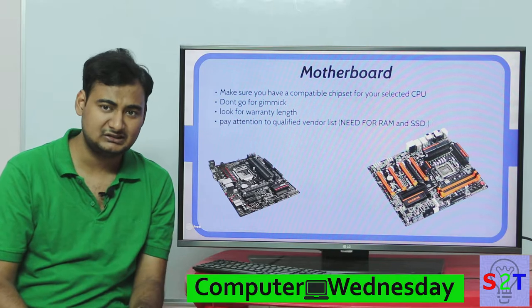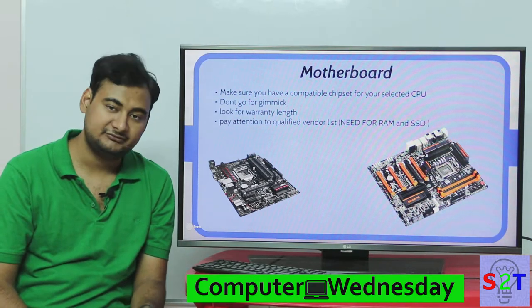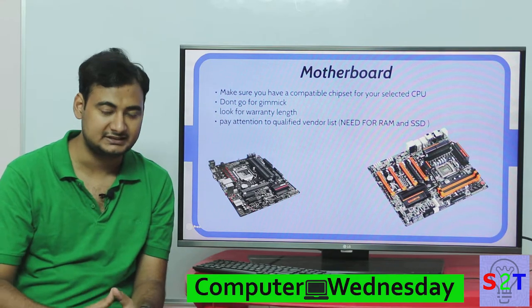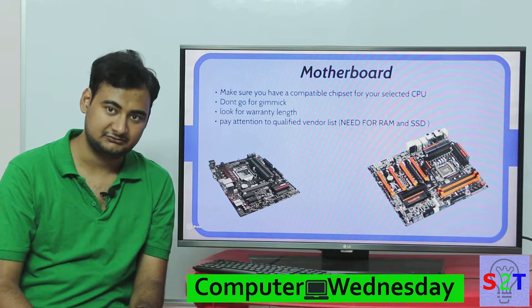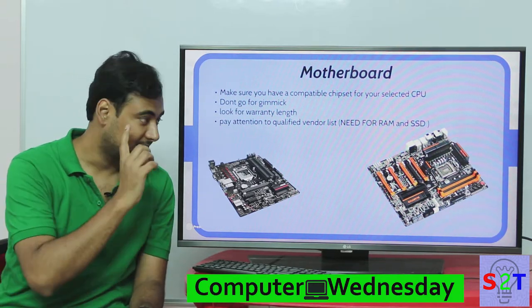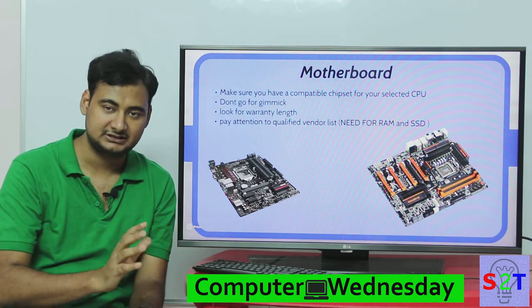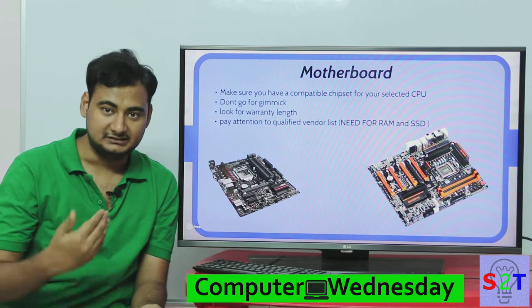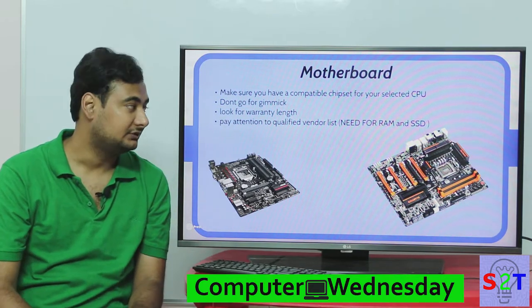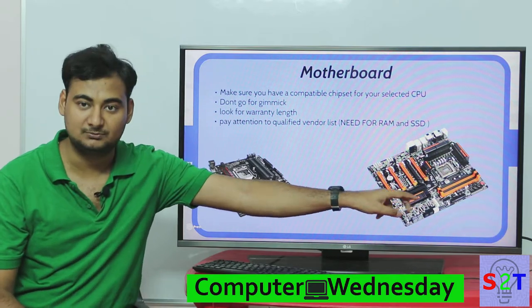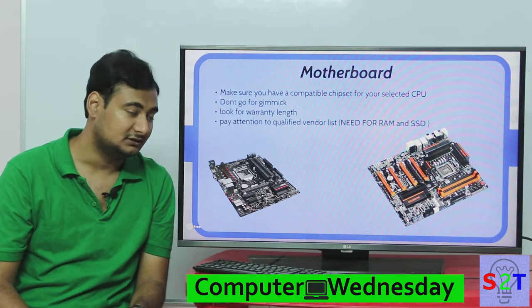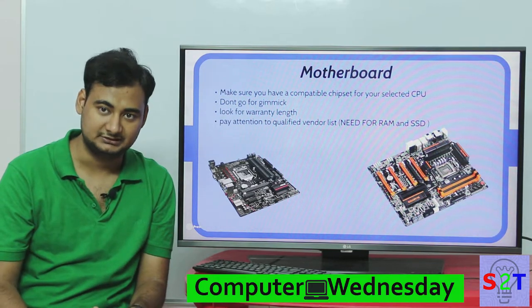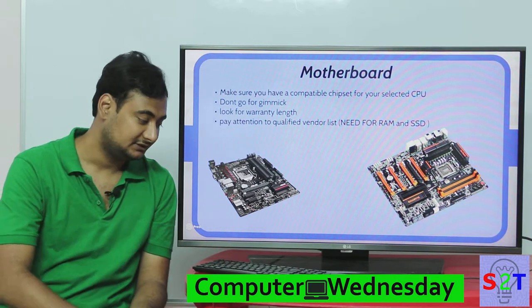An easy way to gauge how long a motherboard will last is the warranty length — typically two to five years, with server motherboards often offering five years. Also look at the QVL (Qualified Vendor List) in the manual, which tells you which RAM is supported and tested with your motherboard. Nowadays the QVL may also include which NVMe SSDs have been tested with it — it's a good idea to follow that list.